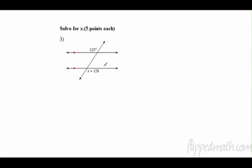So we have to solve. These are alternate exterior angles, and you need to know that when we have those and the lines are parallel, then they are equal. So you set up an equation: 125 equals x plus 128. Subtract 128...